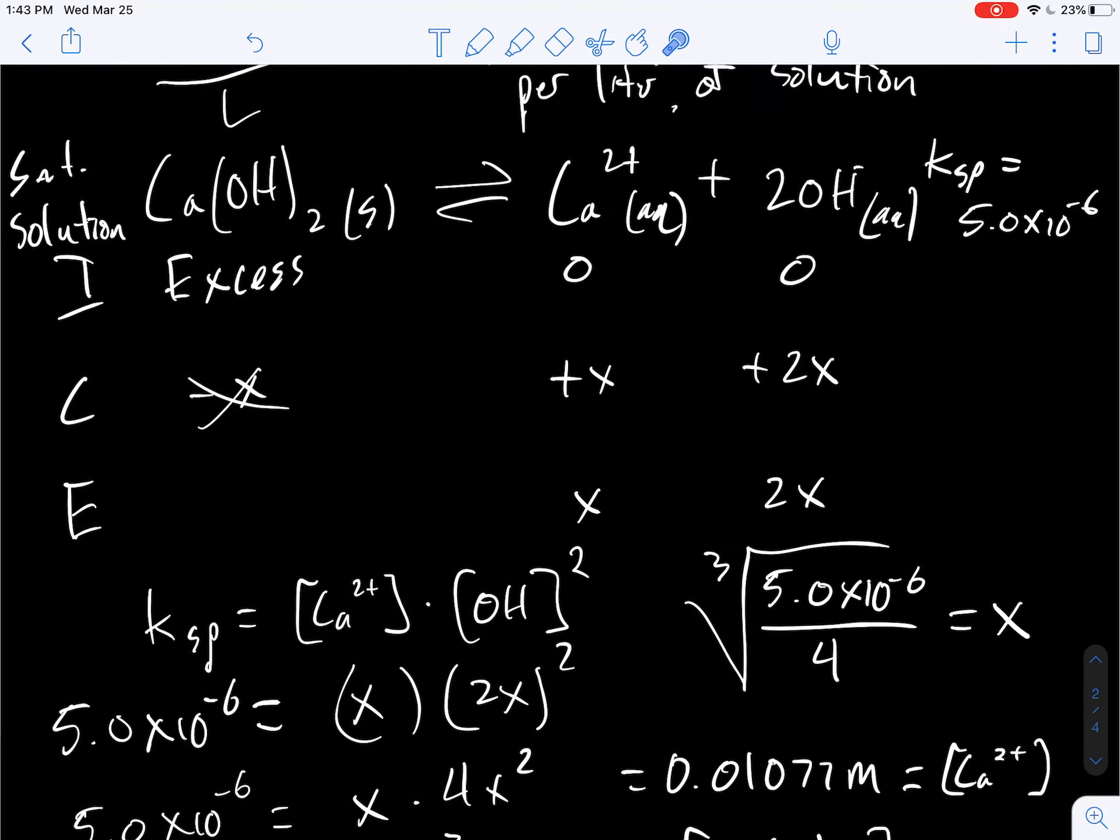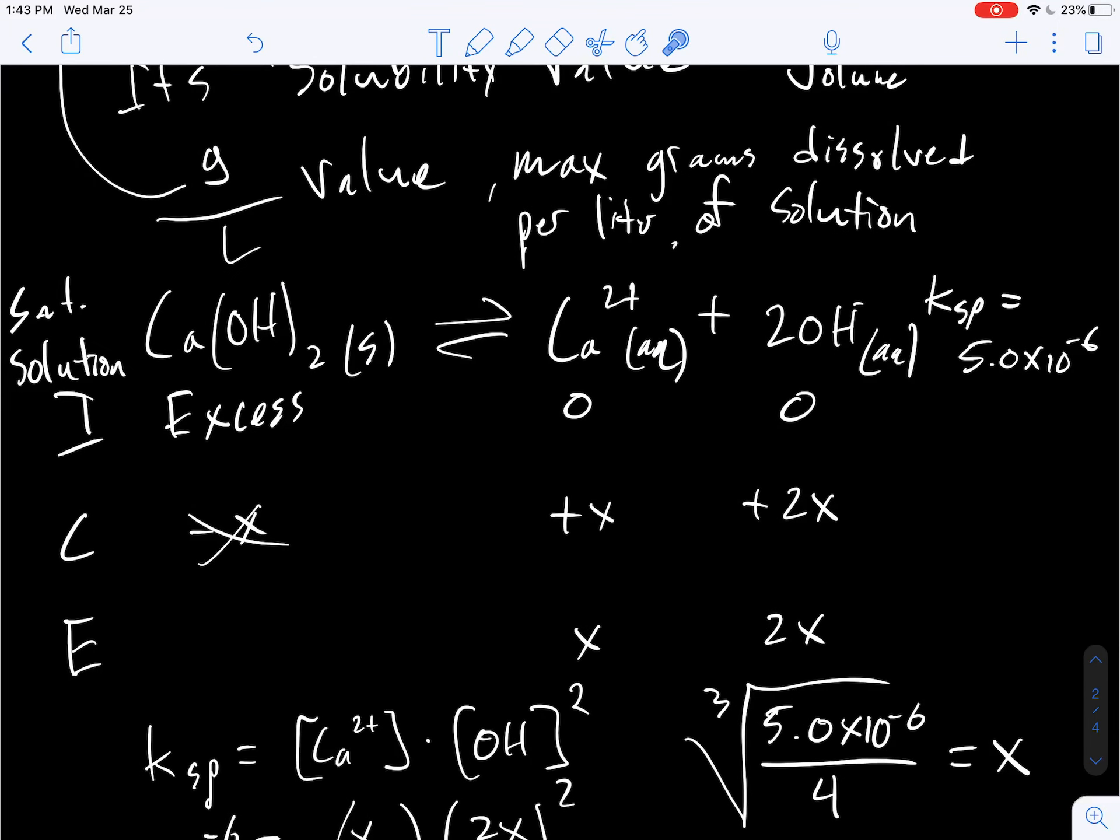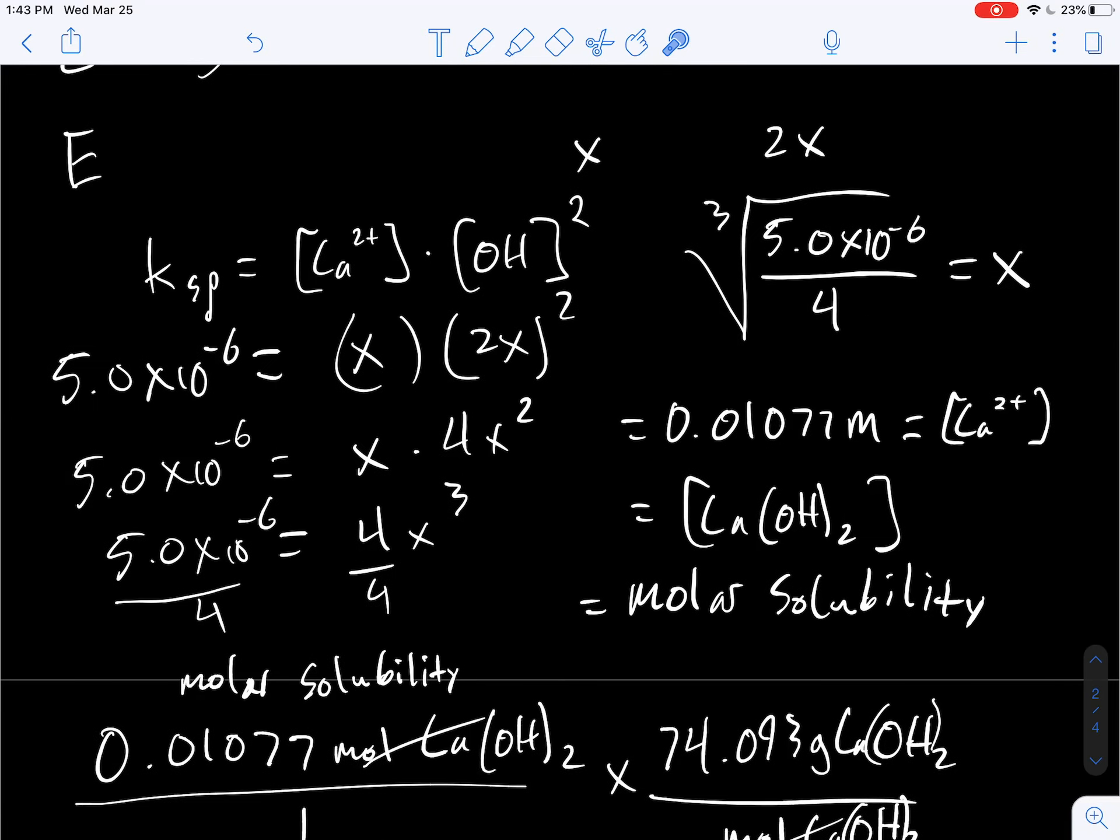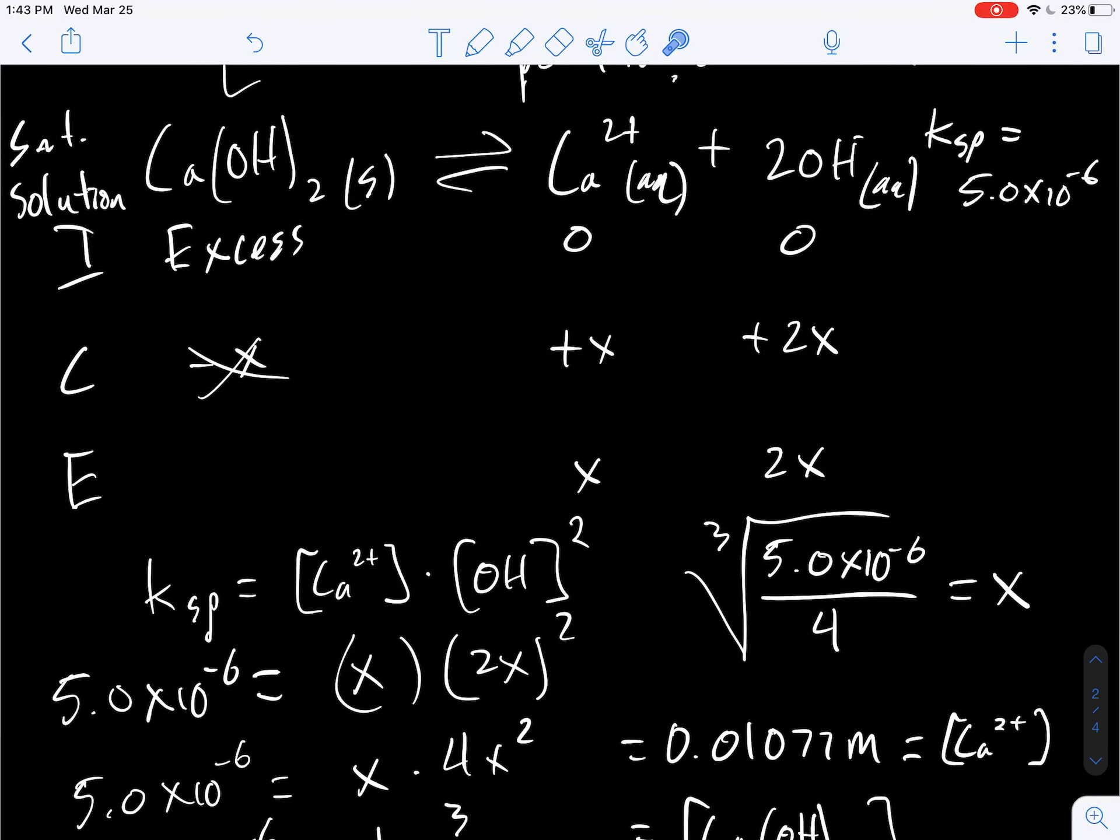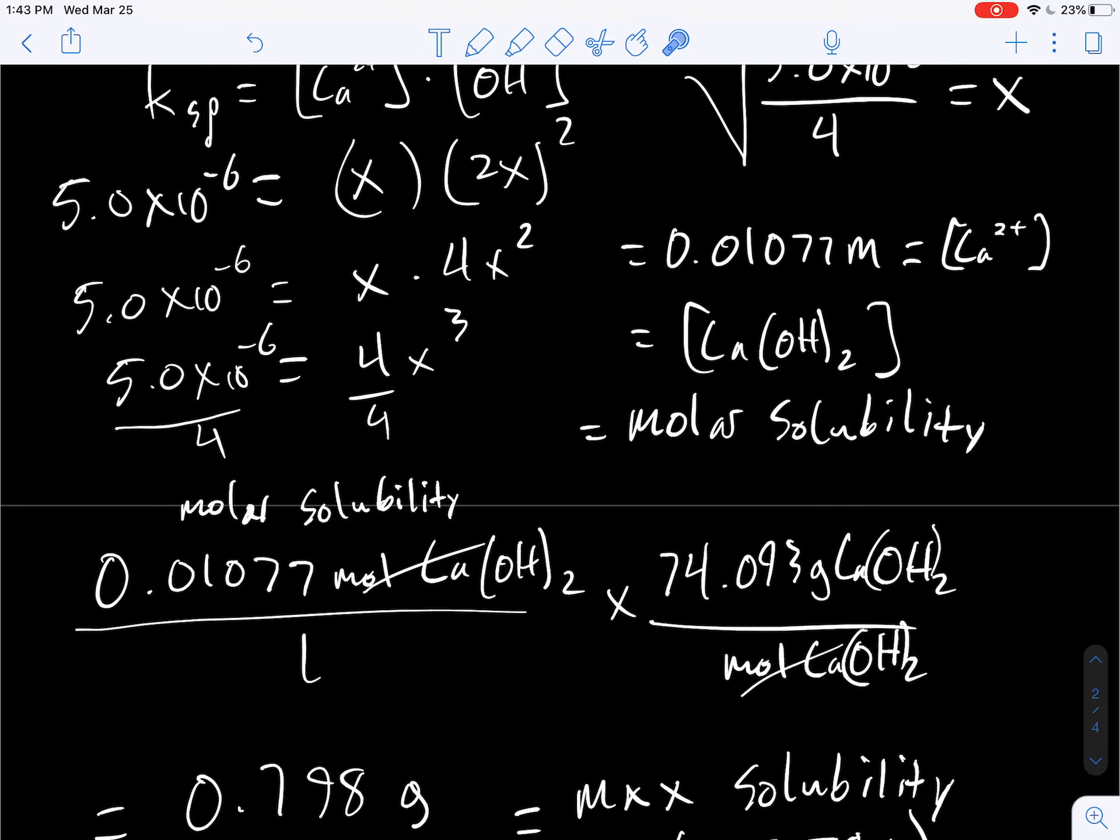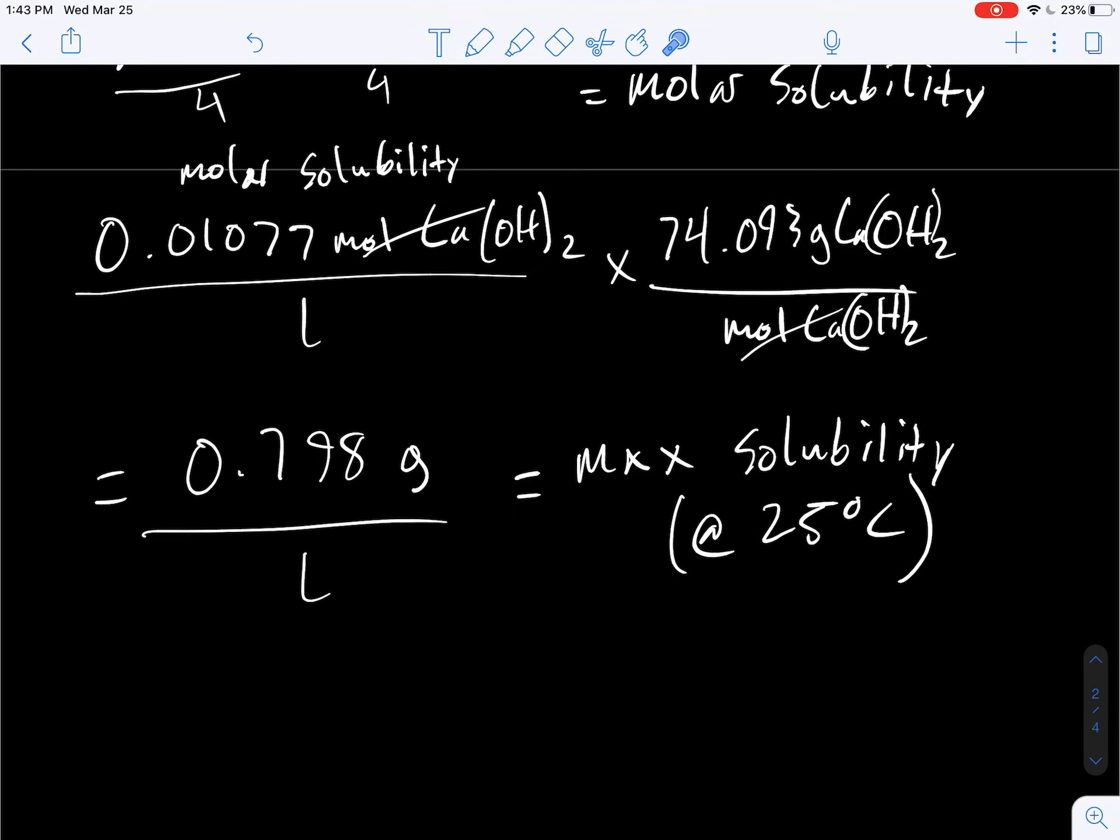So that is how we use the actual Ksp value in an ice table to solve for the molar solubility of this compound. Remember, we use just this x value for the calcium ion x, and equated it to this because it was a one-to-one molar quantity. That value is our molar solubility for calcium hydroxide.